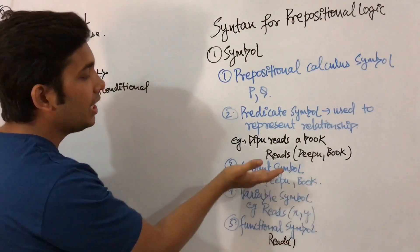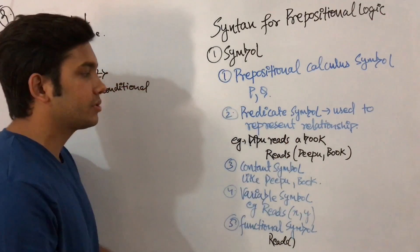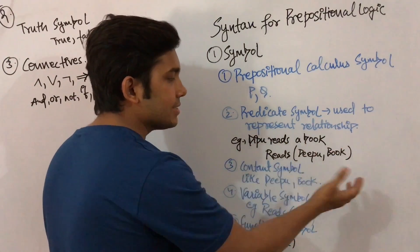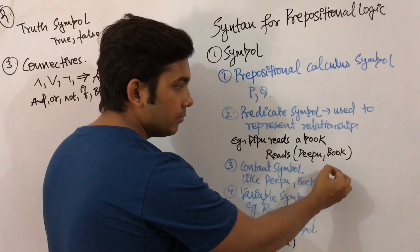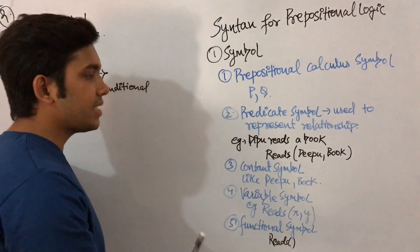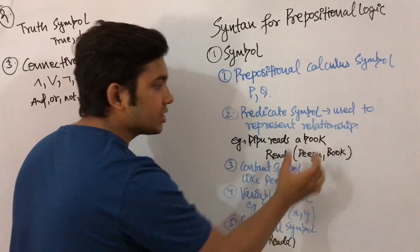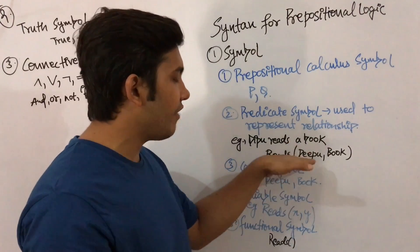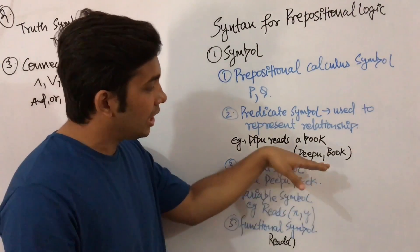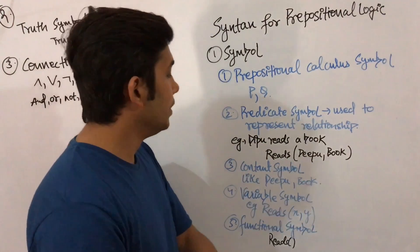The third type of symbol is the constant symbol. For example, Deepu and book are constant symbols. In reads(Ram, English) or reads(Ram, newspaper), Deepu and book are constants because their values do not change — Deepu will remain Deepu and book will remain book.